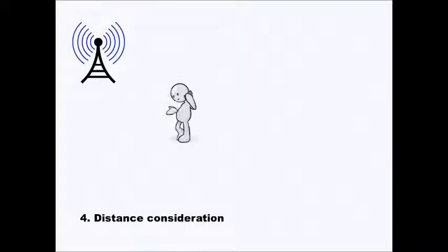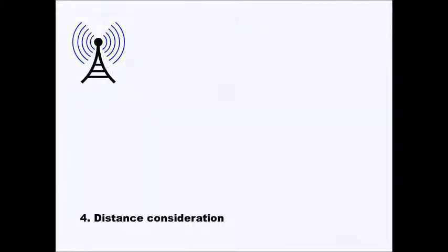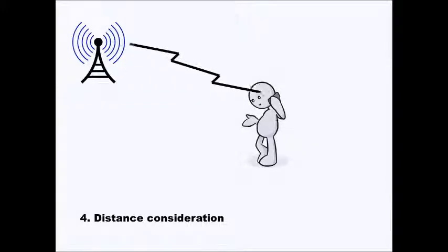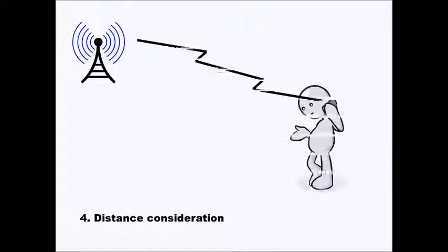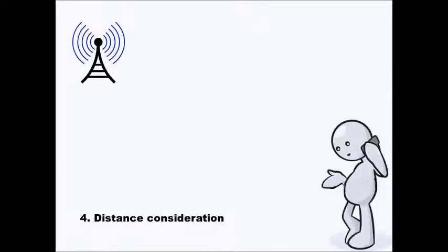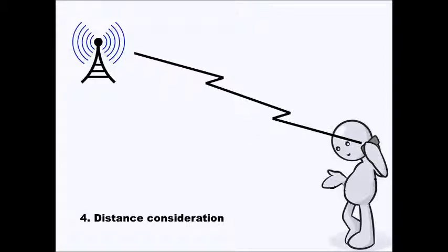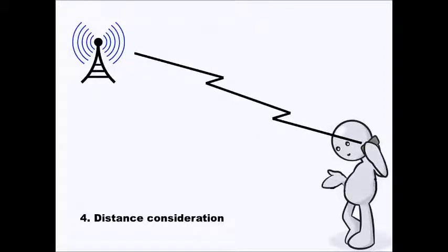The fourth point is distance consideration. When a person moves away from the base station antenna, signal strength decreases — the signal becomes weak. Near the antenna, the person gets the strongest signal. But as the distance from the antenna increases, the signal becomes weaker and weaker. At one point, if the person crosses the boundary of the cell, they lose the signal from the base station. It then becomes necessary to find another antenna which is nearer to the person.